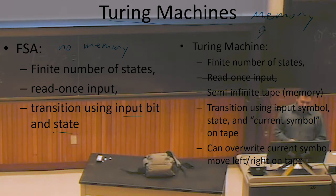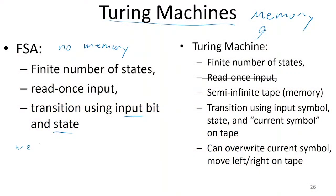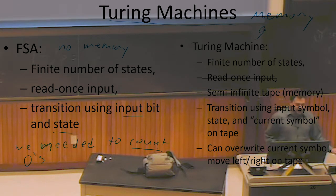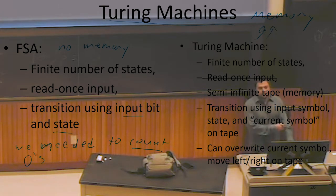For the majority function, the reason finite state automata couldn't compute majority was we needed to count zeros. The size of that count had to be arbitrarily large — as we had more and more zeros, we were going to need more and more space to represent that count. Finite state automata have no memory, so we have no place to write down our current count. Turing machines are going to give us this memory, making them a more powerful model of computation.